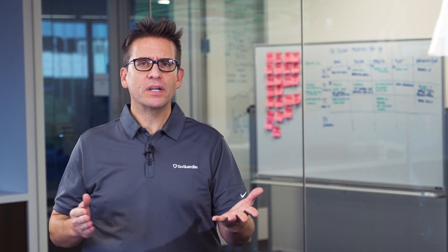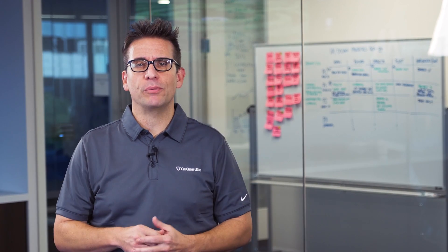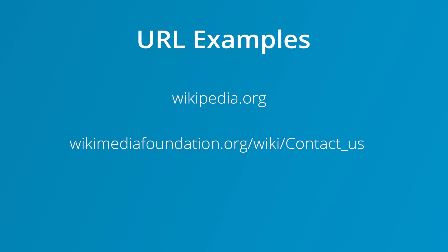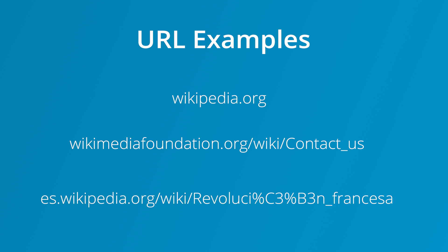We'll use Wikipedia as an example. Let's take a look at three different Wikipedia URLs: a base URL, a URL with a directory folder, and a URL with a subdomain.